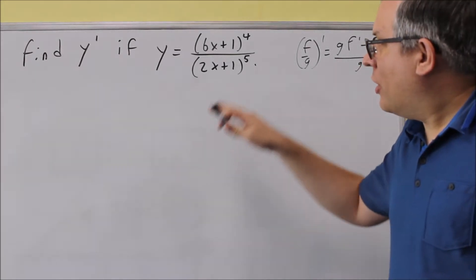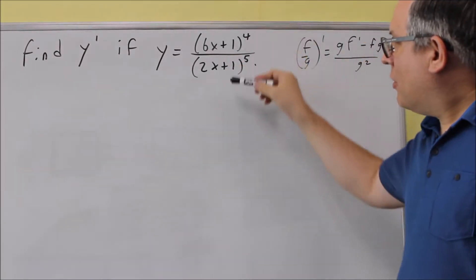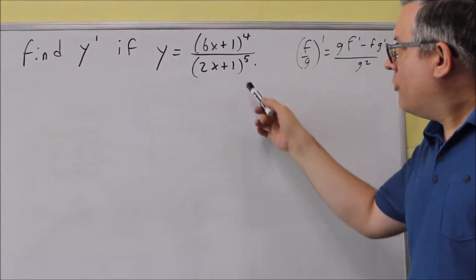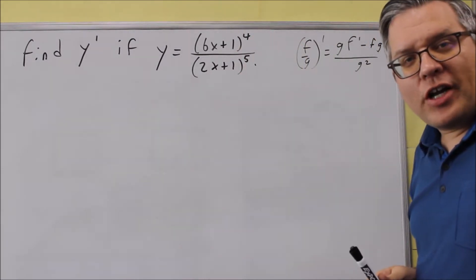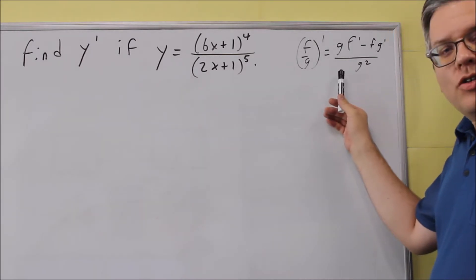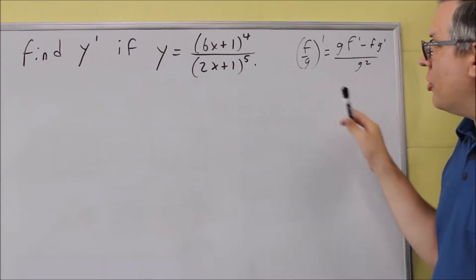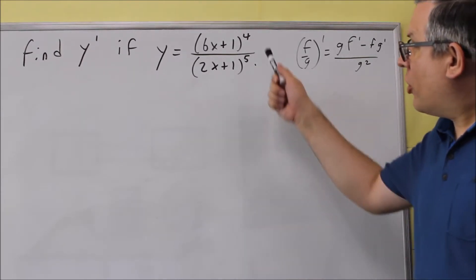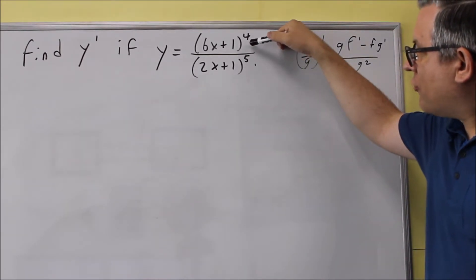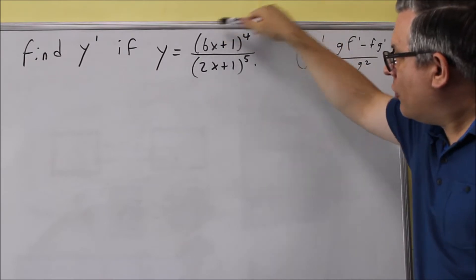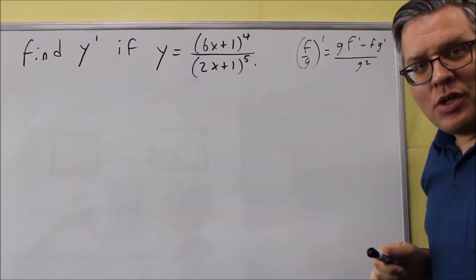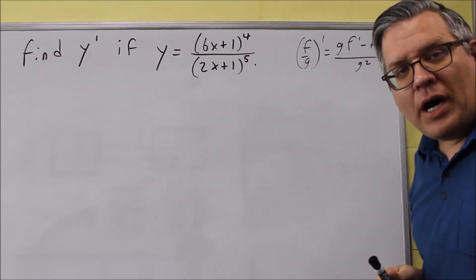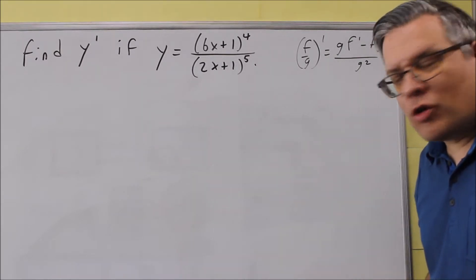We want to do another problem that involves the chain rule, but the whole problem itself requires the quotient rule because you're dividing two different things. We're going to use the quotient rule for the whole problem, but as we go through, we'll have to use chain rules when finding the derivative of the top and the bottom, because you have a quantity raised to a power.